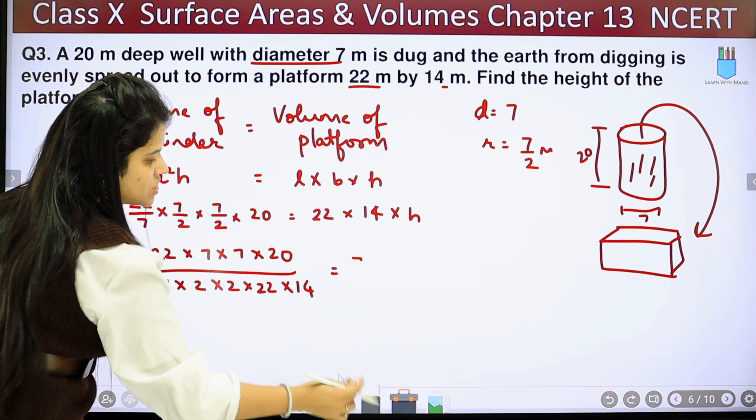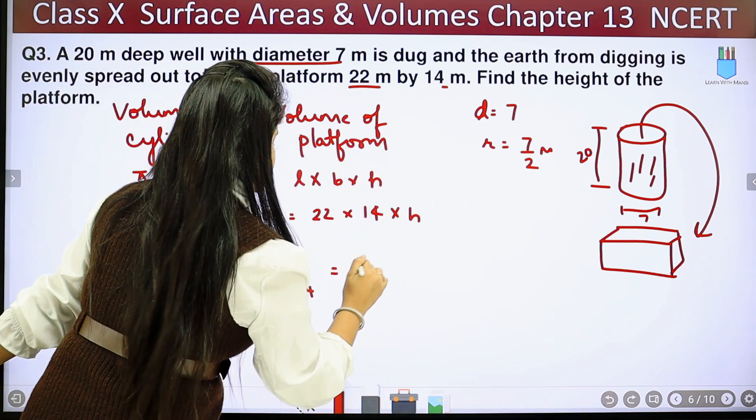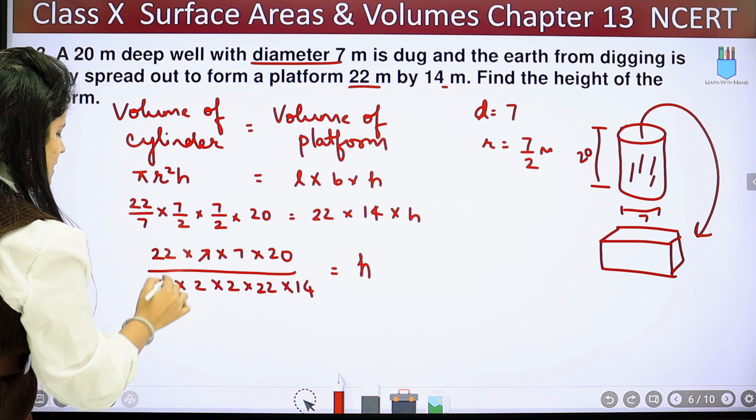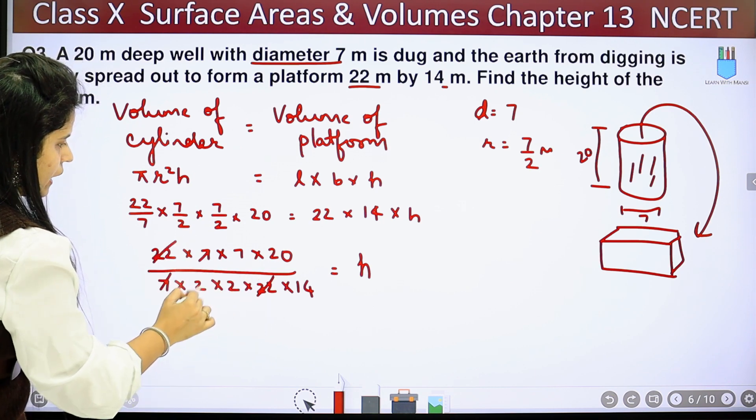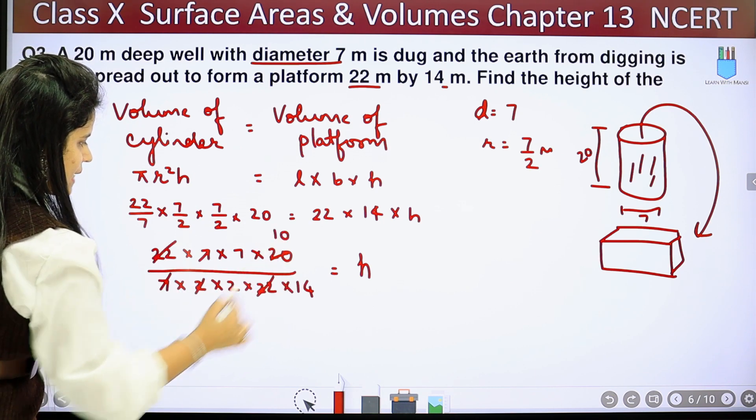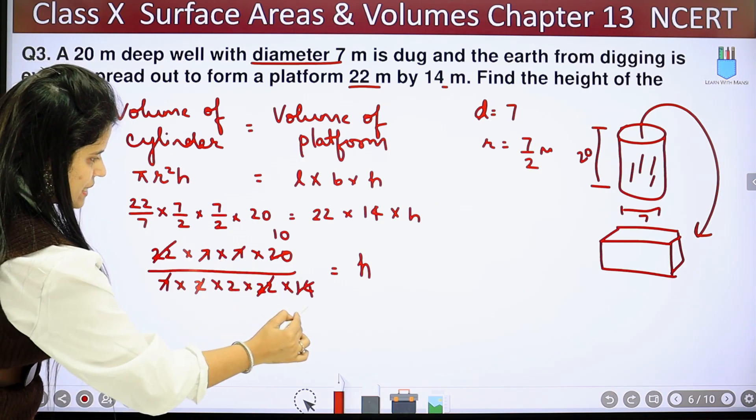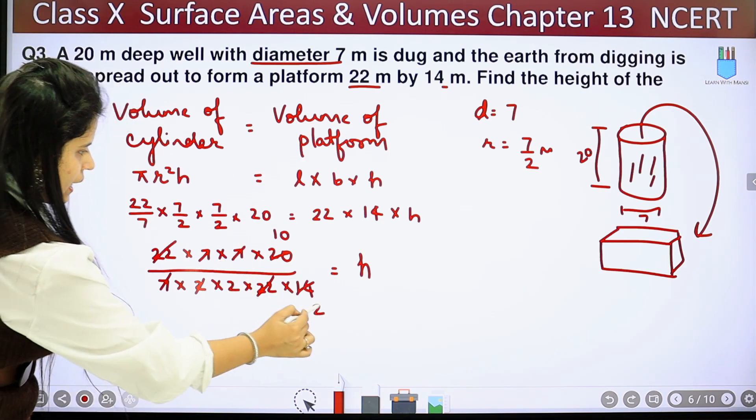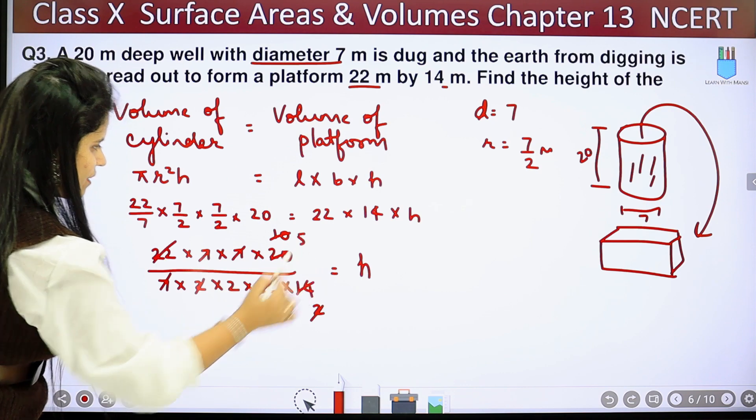So here we have h. Now look, 7 has been canceled. 22 has been canceled. We will cancel it from 2. It will come to 10. 7 has been canceled. It will come to 2. Again, 2 has been canceled. It will come to 5.